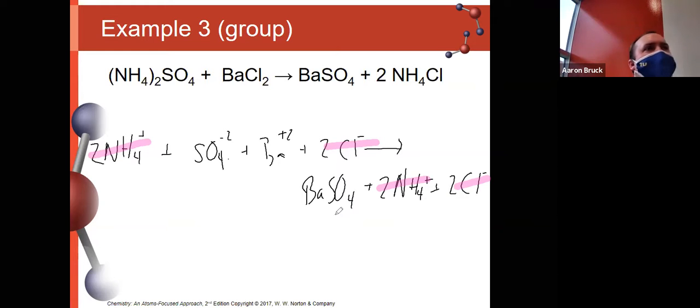Another real quick note there. If you don't have the same number and kind, they don't actually cancel out. In order for them to cancel, in order for them to be truly spectators, they have to be in agreement in number and kind. So, last part here, get it into the net, it's SO4-2 ion plus Ba+2 ion to make BaSO4.